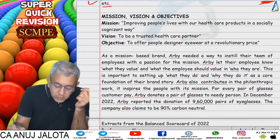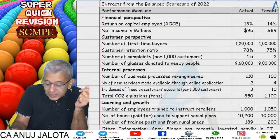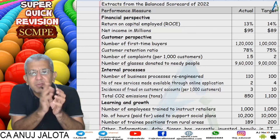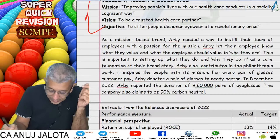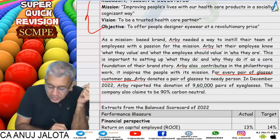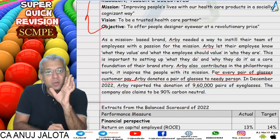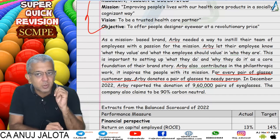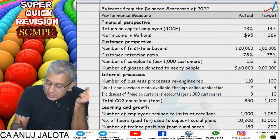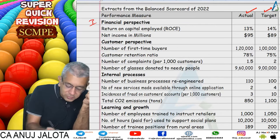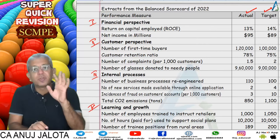The company's mission, objectives, and vision are given. Data was given where the classification is already done into the four perspectives. One notable detail: for every pair of glasses a customer pays for, RB donates a pair to a needy person — this is their philanthropic work. The task was to comment on how good the performance was in each case, comparing targets against actuals.